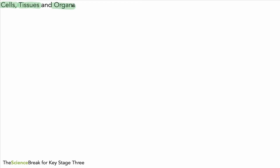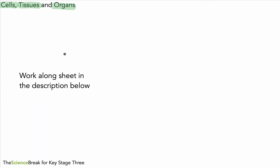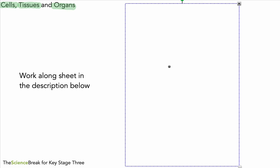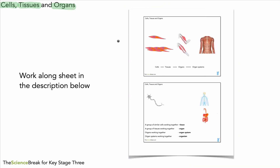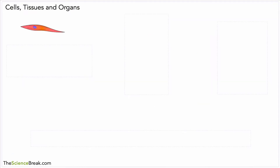Hello, today we're looking at cells, tissues and organs for biology for Key Stage 3 — so cells, how they relate to tissues and how they relate to organs. Before we do that, you can download the work-along sheet from the description below. You can print it off and write notes along with the video, or of course you can just use paper, or you don't have to take any notes at all.